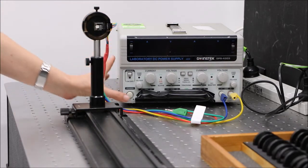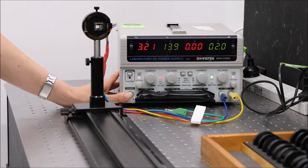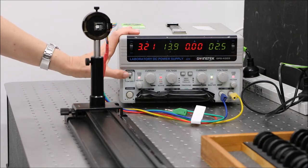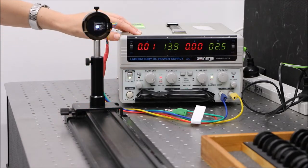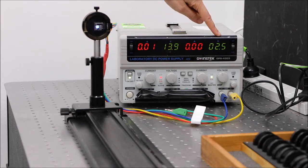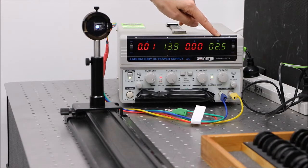Turn on the power supply. Press the output button to apply power to the terminals. Ensure that the voltage doesn't exceed 5 volts, otherwise this will damage the LED device.